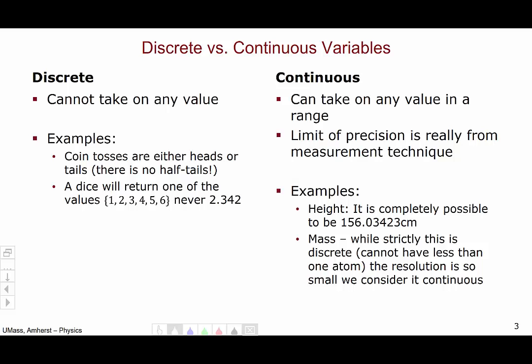Similarly, we often consider mass to be continuous variables. Now, while strictly mass is going to be discrete because you can't have less than one electron's worth, the resolution is so small that we generally consider mass to be a continuous variable.